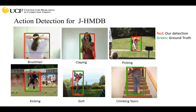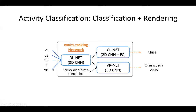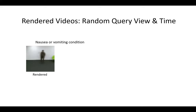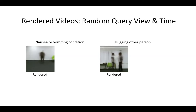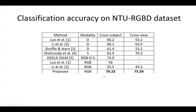We have also worked on view-invariant action recognition. The idea is that we get videos from different viewpoints and we want to synthesize the view from novel viewpoints. The features we learn are robust enough that we can use them for classification from any viewpoint. We can get about 20% increase in performance on the very famous NTU RGB dataset using representations learned from cross-view synthesis.